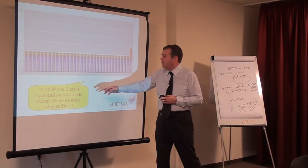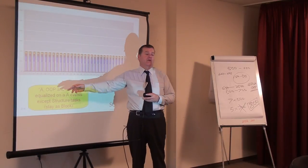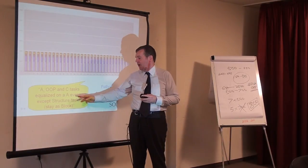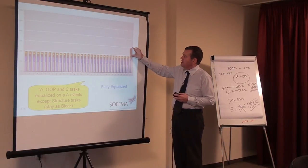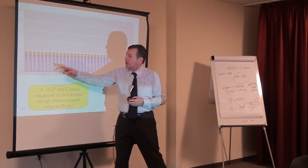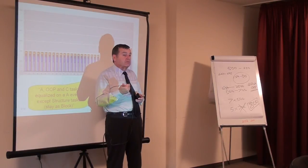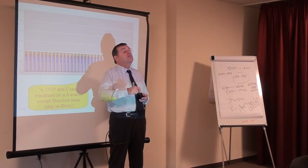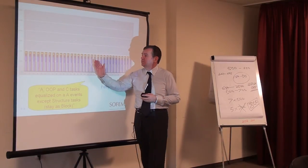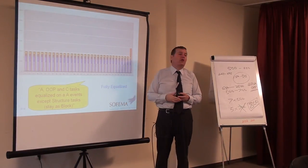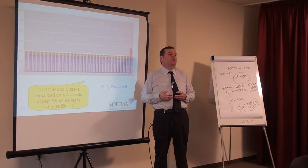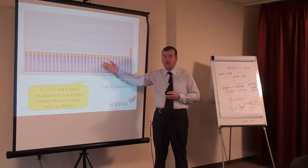Here, what we've done is the A checks, OOP stands for out of phase, and the C checks are equalized on an A check, with one exception. This is our structural program. Here now, we're doing an A1 check plus part of an A2 check plus part of an A4 check plus a little bit of the C check, each time the airplane comes in. So this is a fully equalized maintenance program with one exception. The very heavy checks for structure would be outsourced. That's another way of doing it.